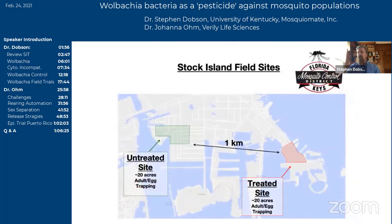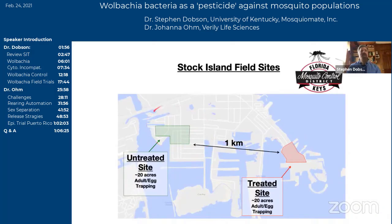Moving forward quickly, this is what a typical trial looked like. We've moved from California — this is now Stock Island, Florida, in Monroe County, down in the Florida Keys. You'll see a recurring theme: one or more treated sites and one or more untreated sites. We like to keep a distance between them of at least a kilometer to minimize released males migrating across and affecting the untreated site. We're measuring adult numbers using BG traps, also collecting eggs with ova traps, looking at both egg number and egg hatch rates because of this incompatibility.